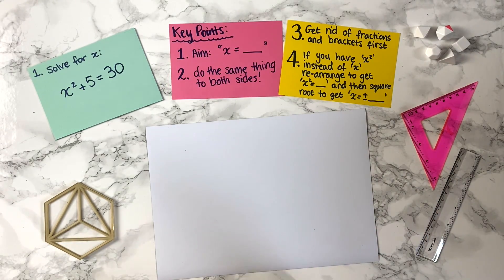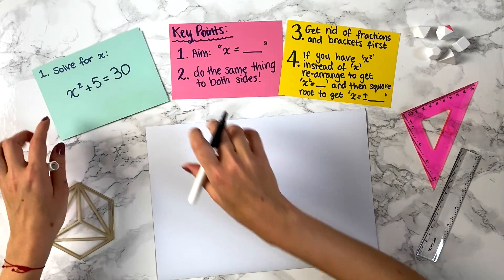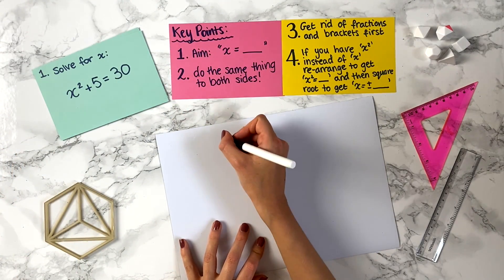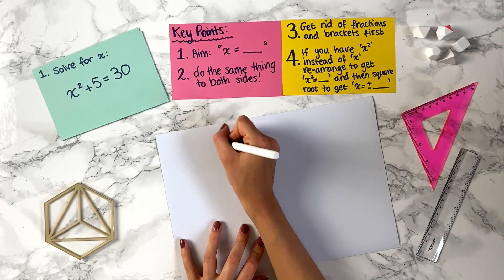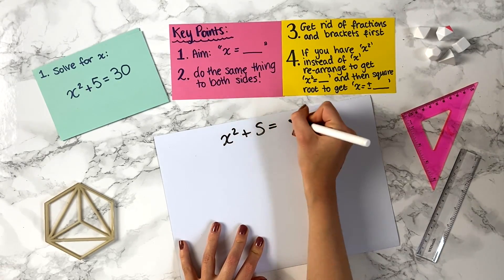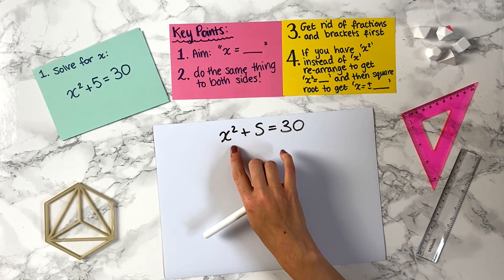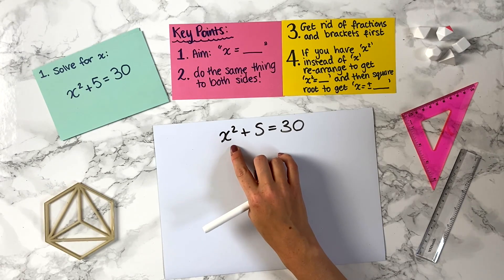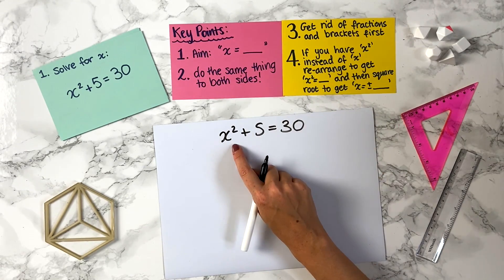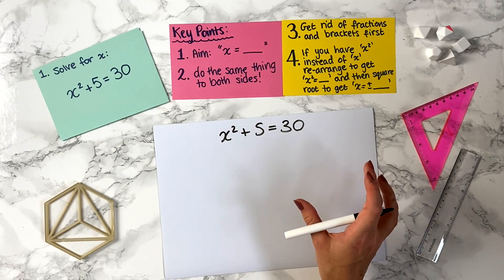Question 1: solve for x — x squared plus 5 equals 30. You'll notice here we have an x squared instead of just an x, so our key point 4 applies. We now want to rearrange this to get x squared equals something.